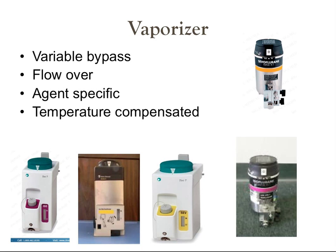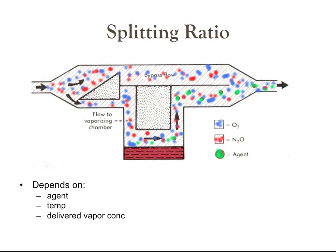The vaporizers that we use are variable bypass, flow over, agent specific, and temperature compensated. The total flow of gas arriving from the anesthesia machine is split between the variable bypass and the vaporizing chamber, where the anesthetic agent is contained. The ratio of these two flows is the splitting ratio, which depends on the agent, the temperature, and the chosen vapor concentration to be delivered to the patient circuit.